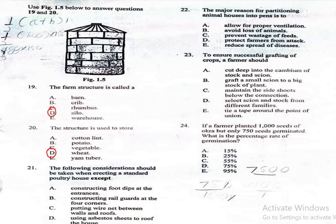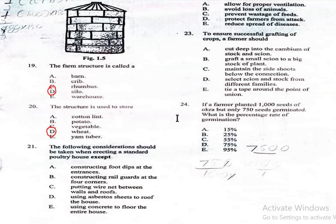Question 21. The following considerations should be taken when erecting a standard poultry house except one of them: A. Constructing foot dips at the entrances, B. Constructing rail guards at the four corners, C. Putting wire nets between walls and roofs, D. Using asbestos sheet to roof the house, E. Using concrete to floor the entire house. The correct answer is D, using asbestos sheet to roof the house. Asbestos is harmful to health and is not recommended for any construction due to its properties. That is why D is the right answer.